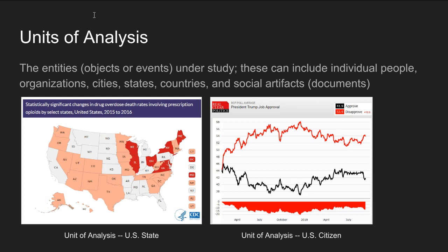Units of analysis refer to the entities — which include objects or events — that the researcher is studying. These can include individual people, organizations, cities, states, countries, and social artifacts such as documents. These are basically the units that the researcher is studying.